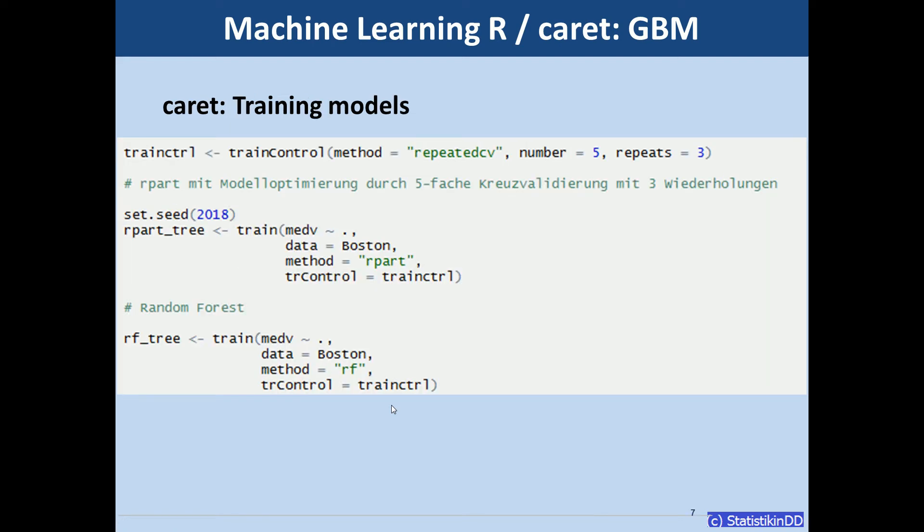Now we dive into Caret. Caret is a great package for machine learning in R. One reason is that it makes cross-validation very easy. Here in the top line we define a train control object. And we just say that we want repeated cross-validation, five-fold cross-validation with three repetitions.